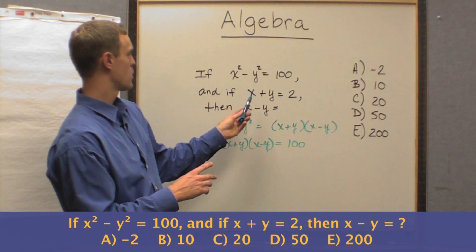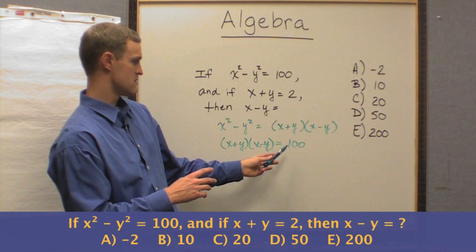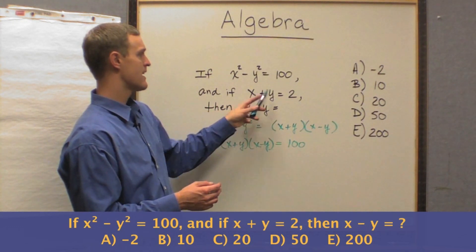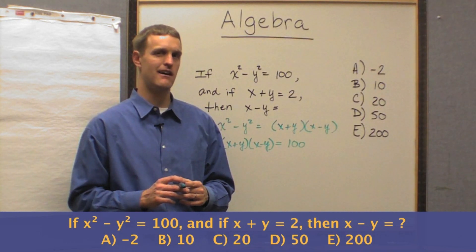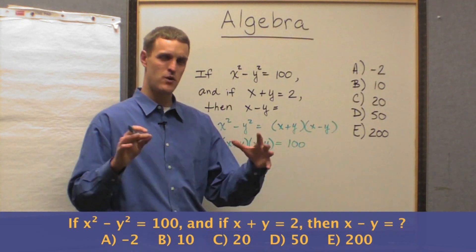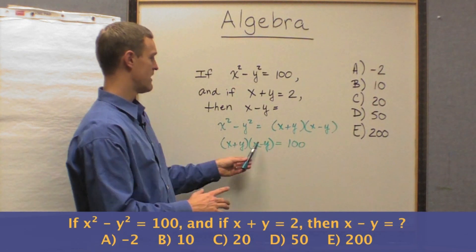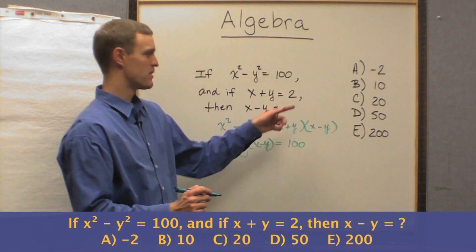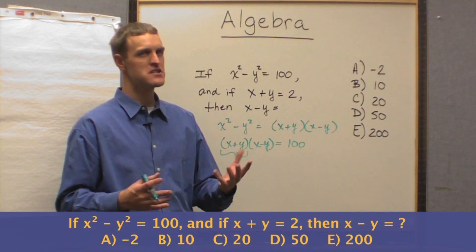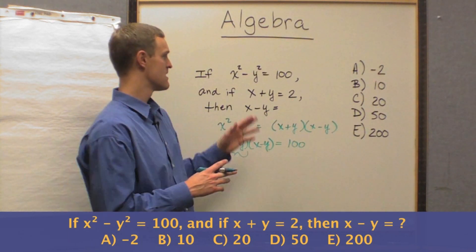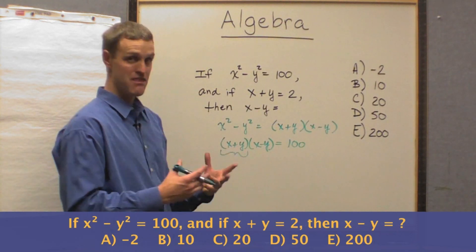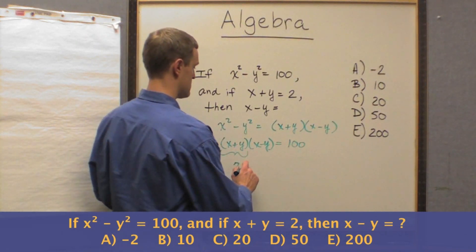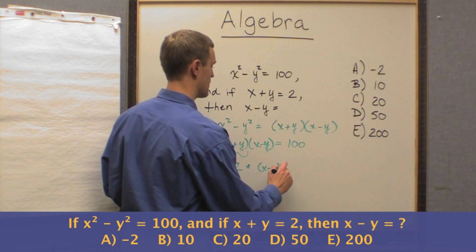And then we continue to look at the question. So if that equals 100, which means those factors multiplied together equals 100, and if x plus y equals 2, what do we notice? Well, the beauty is we've taken that quadratic equation, we've broken it out into its factors, and what do we notice? One of those factors is exactly what the question gives us information about, right? It's no coincidence that the test gives us x plus y equals 2. x plus y, that term equals 2.